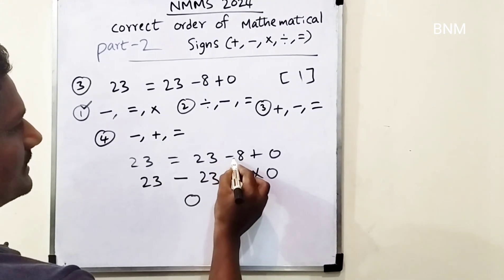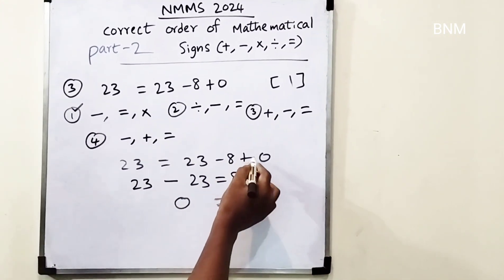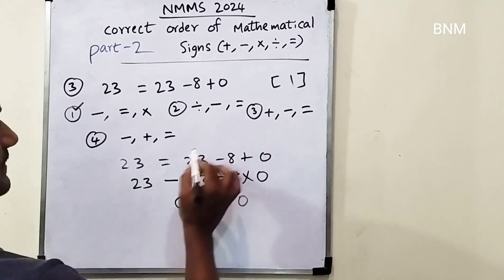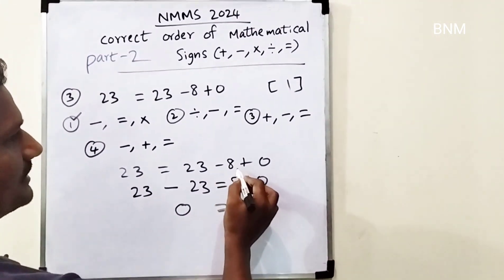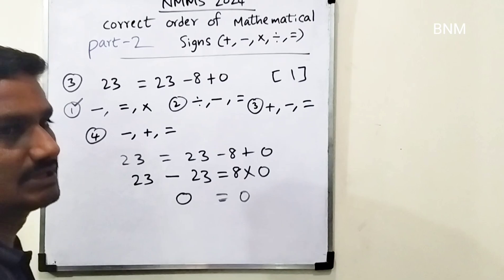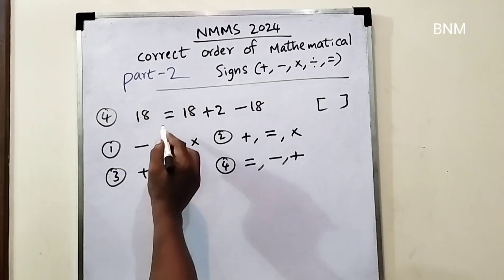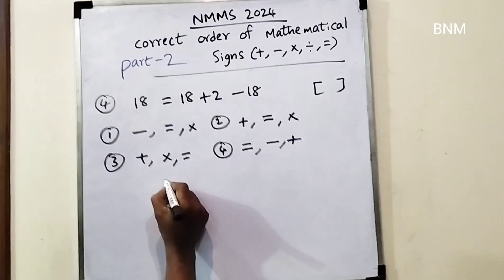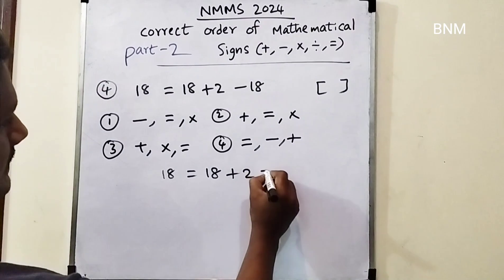1 minus 8 is minus 7; minus 7, 0 equals 0. This is the answer we write down. Next: plus 6 minus 8 is equal to 0. First one is equal to 1, first one is equal to 2. Fourth one: 18 equals 18 plus 2 minus 18 equals 0. First 2 is 18; 18 is equal to 18 plus 2 minus 18.